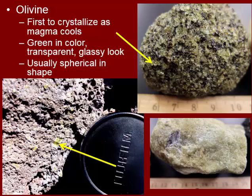So the first mineral — when you're looking at a rock, how can you tell what mineral is what? So for olivine, it's typically green in color. It has this kind of glassy, transparent look to it, and it is the first to crystallize, so it typically has a spherical shape. You can see some of the crystals in these rocks here that have that nice round shape to them, whereas the rock in the lower right corner is actually made completely of olivine. So olivine: green in color, glassy, very hard, and it usually has kind of a round shape to it.